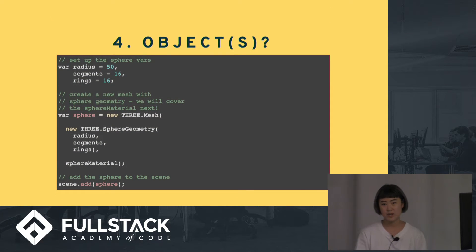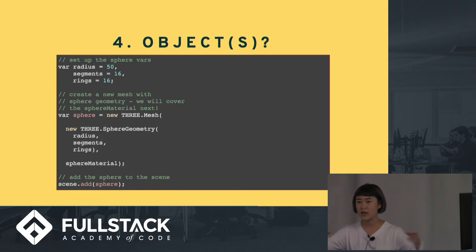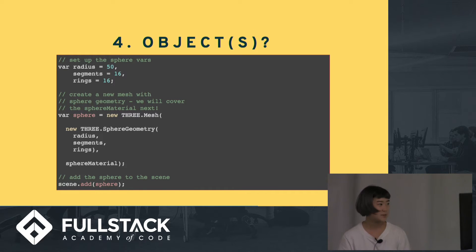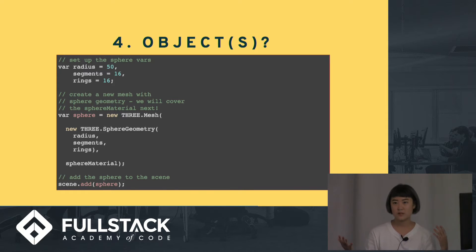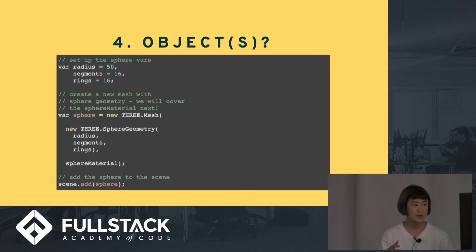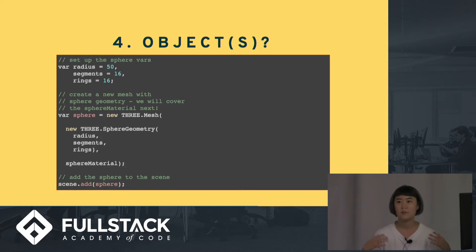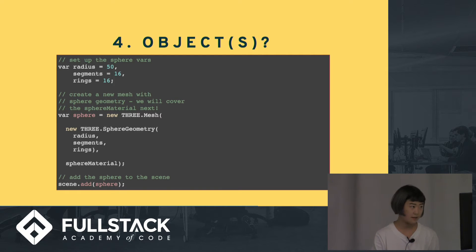And you need objects. The cubes and the plane that you saw make just the general atmosphere — you need to add some objects. Three.js gives you basically basic geometries to use, so this one would just show up with a sphere in the middle of the scene, but you can also use a plane, a cone, anything. And then you'll see again: scene.add(sphere).